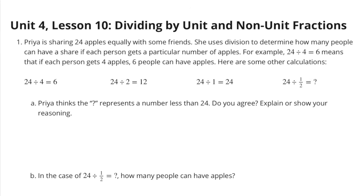24 divided by 4 equals 6. 24 divided by 2 equals 12. 24 divided by 1 equals 24. And 24 divided by a half equals question mark. Part A: Priya thinks the question mark represents a number less than 24. Do you agree? Explain or show your reasoning.